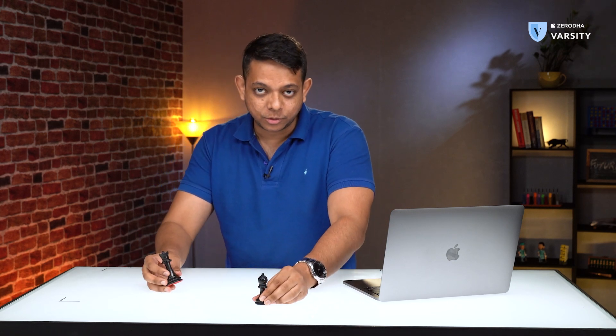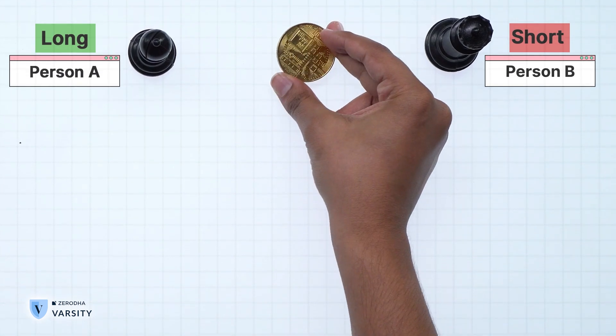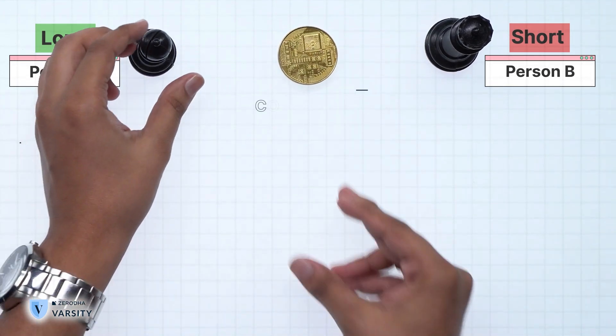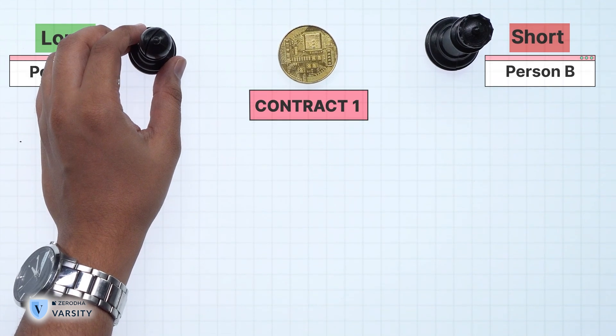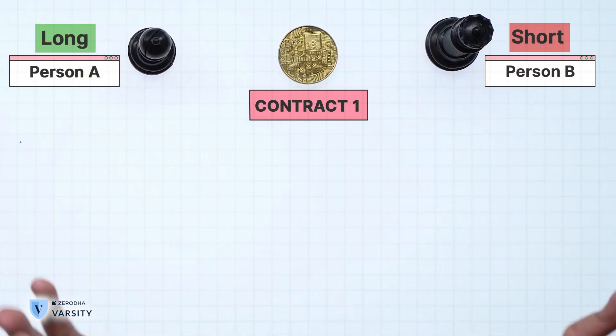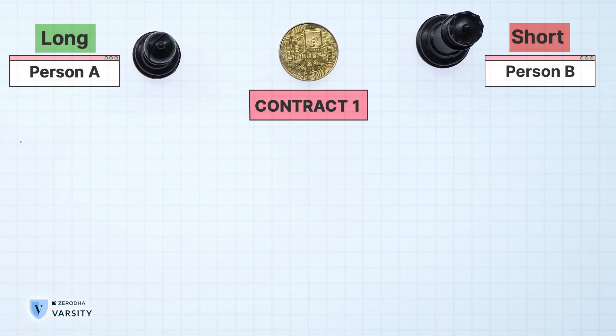The first thing we'll talk about is open interest. Let's suppose there are two players in our example. One person wants to go long and another person wants to go short. They place these orders to create one single contract — person A buys one lot of futures and person B sells one lot of the same futures contract, creating one new contract.